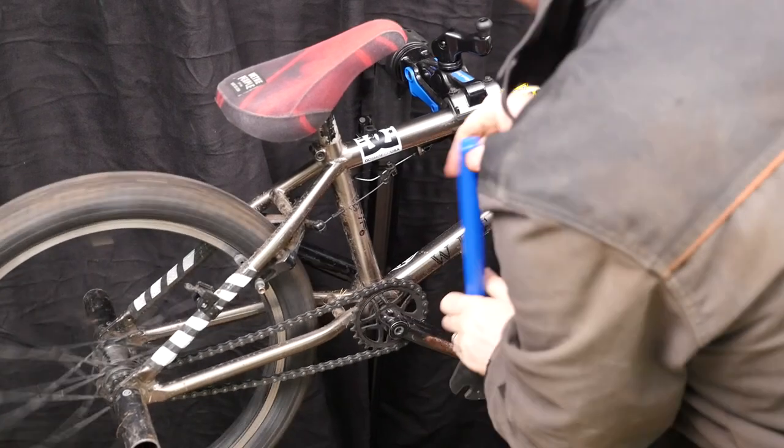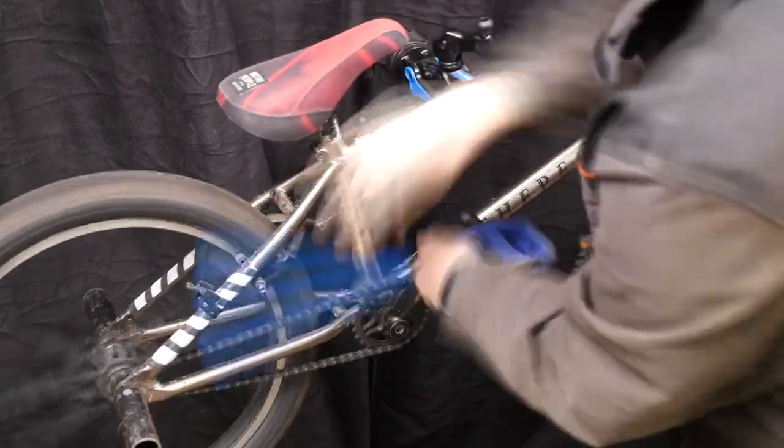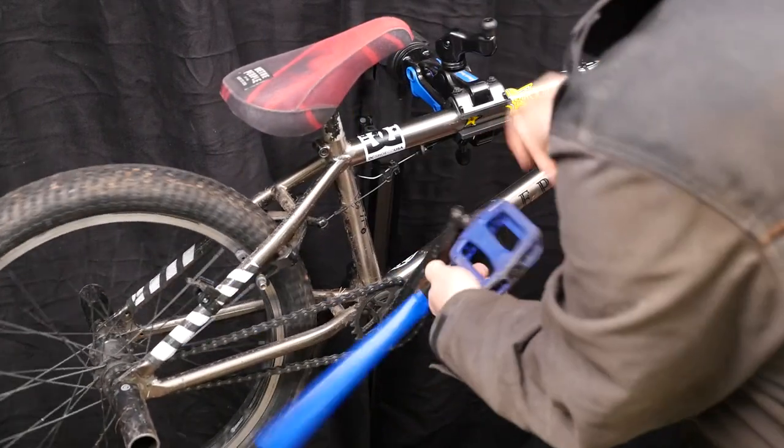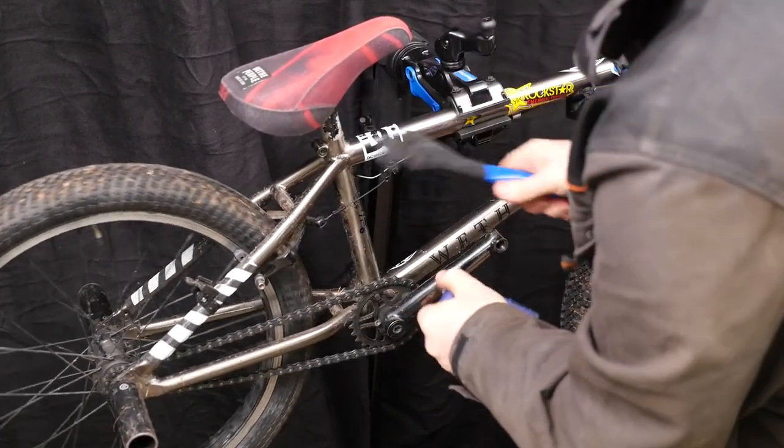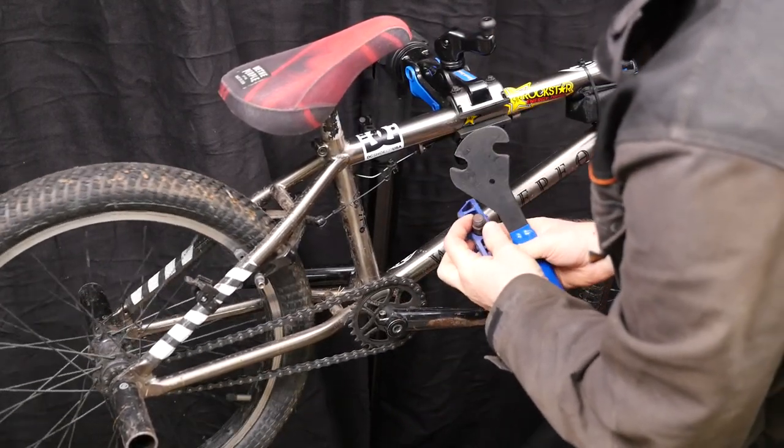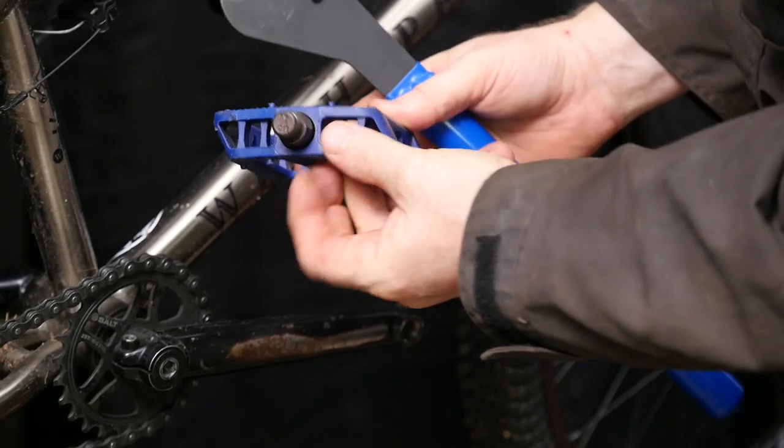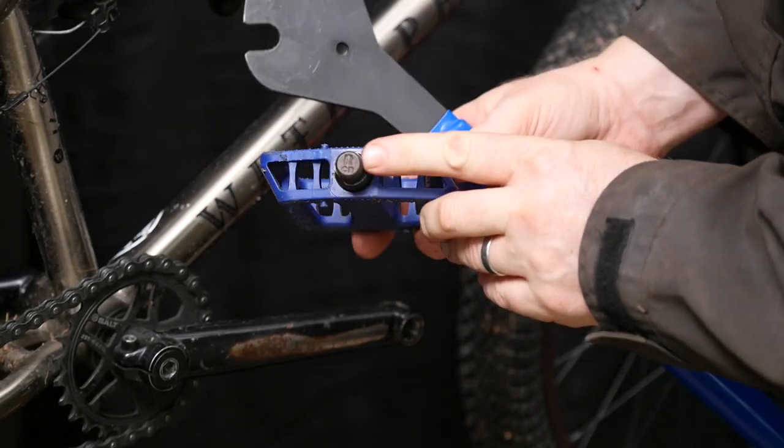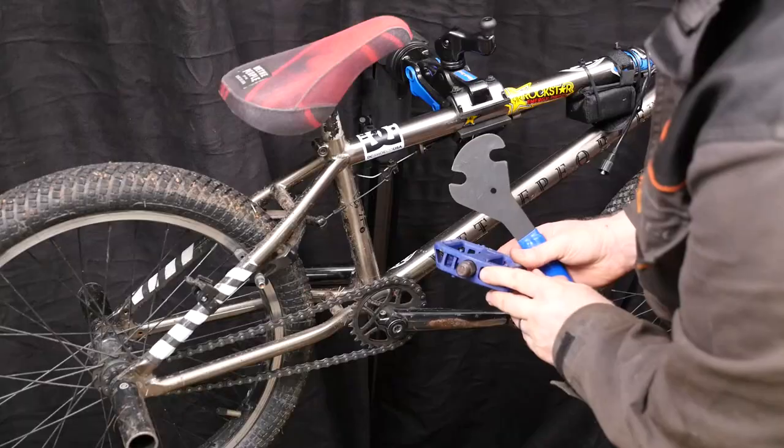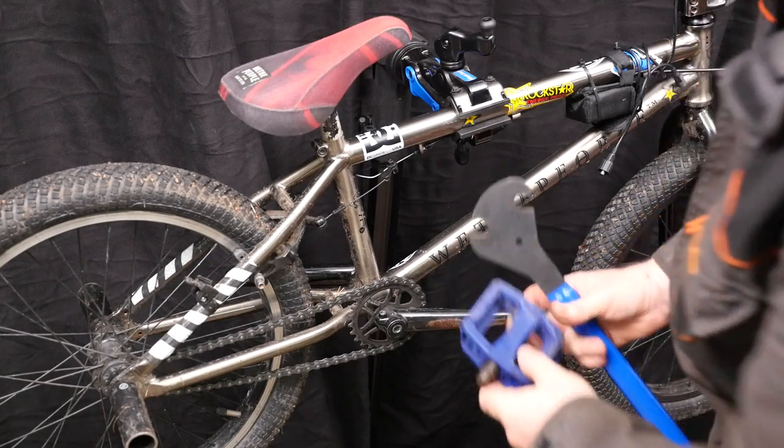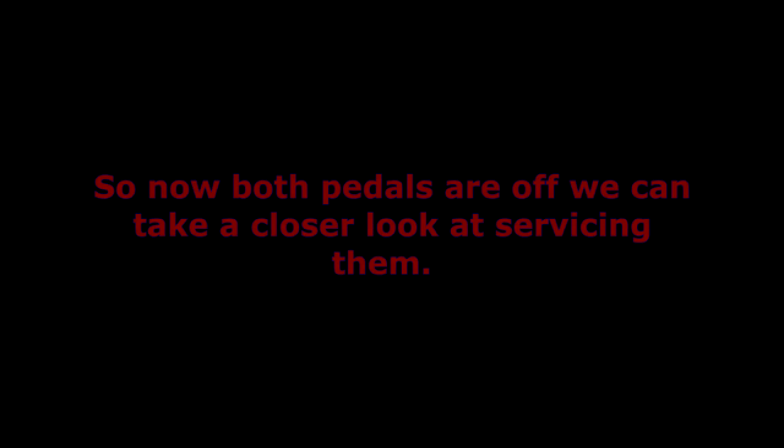So I'll speed this pedal up and again on the end of the axle of this pedal you'll see the letter R for right. Can be clearly seen there. It may also be stamped on the edge of the axle as well. So now both pedals are off we can take a closer look at servicing them.